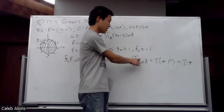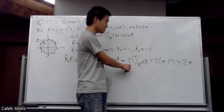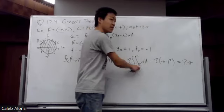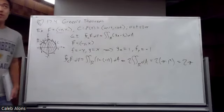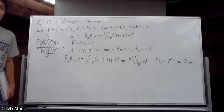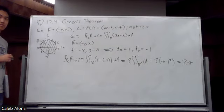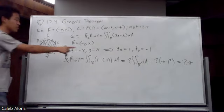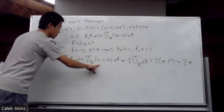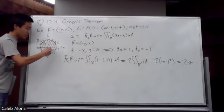If the curl were constant, you'd still just be finding the area multiplied by that constant. For an ellipse, the area formula is πab where a and b are the semi-major and semi-minor axes.